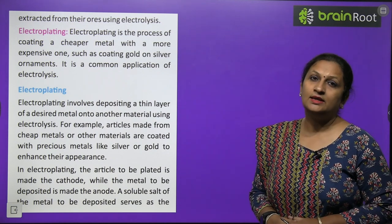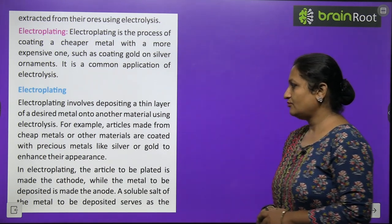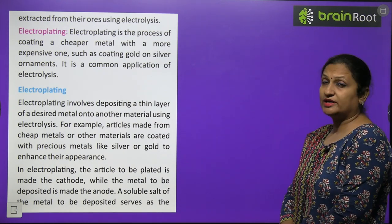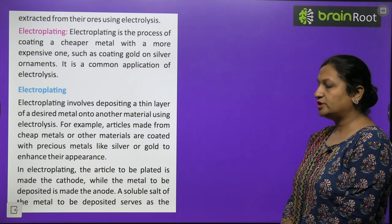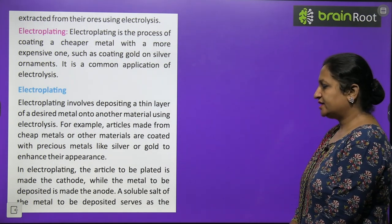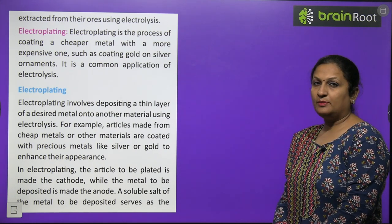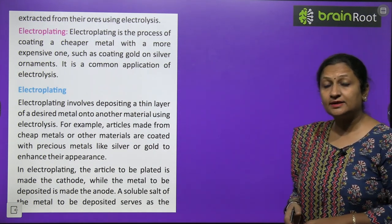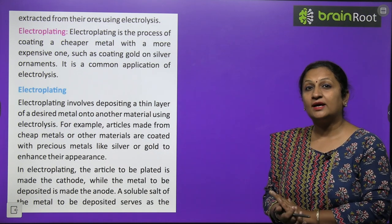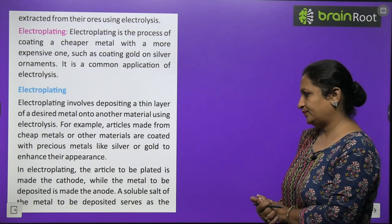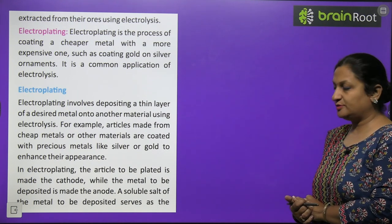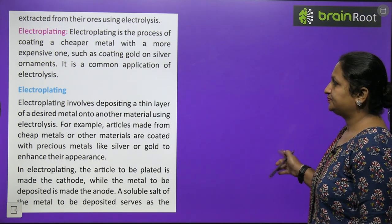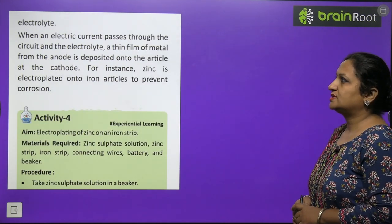Articles made from cheap metals are coated with precious metals like silver or gold to enhance their appearance. In electroplating, the article to be electroplated is made the cathode, and the material to be deposited is made the anode. A soluble salt of the metal to be deposited serves as the electrolyte. When electric current passes through the circuit and electrolyte, a thin film of metal is deposited.